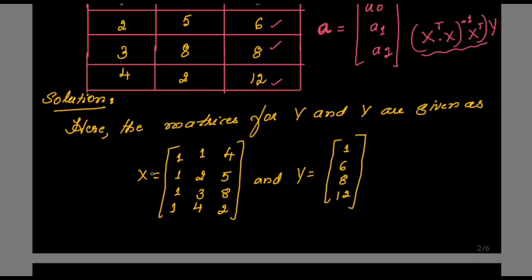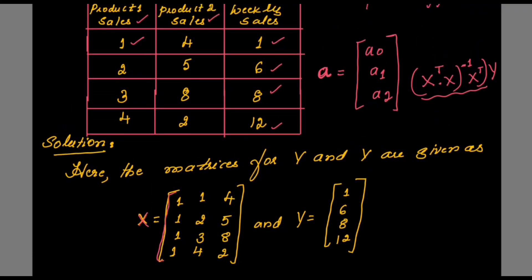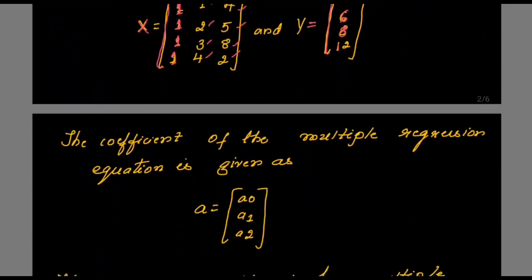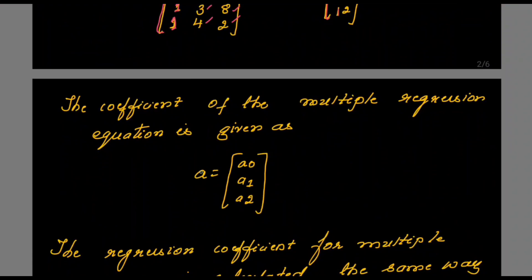The first step is forming matrix X. Matrix X will have the values given in the data set — 1, 2, 3, 4 are the values for product 1 and 4, 5, 8, 2 are the values for product 2. You also introduce one more column of all 1s, which is used to set the bias. So now you have 3 columns in this matrix. You also form the Y matrix, which has elements 1, 6, 8, and 12. Matrix A will hold the coefficients A0, A1, and A2.